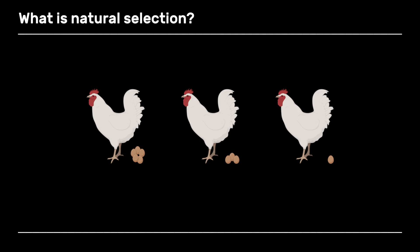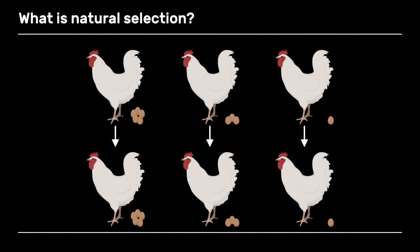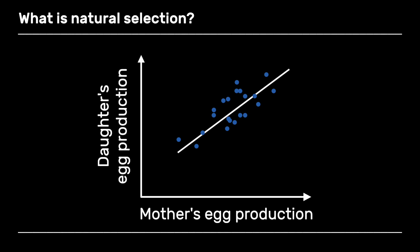So let's recap natural selection. For natural selection to happen, you have to have variation between individuals. So here we have three chickens laying different numbers of eggs — one of the chickens lays more eggs than the other two. This variation needs to be heritable. So the offspring of these chickens should lay a number of eggs similar to what their mother used to lay. We can also plot the number of eggs produced by the mother against the number of eggs produced by her daughters. The correlation between the daughter's egg production and the mother's egg production is the heritability.